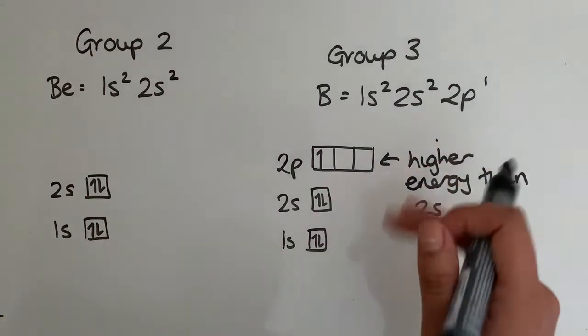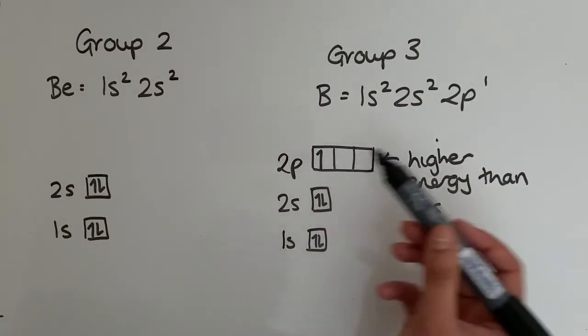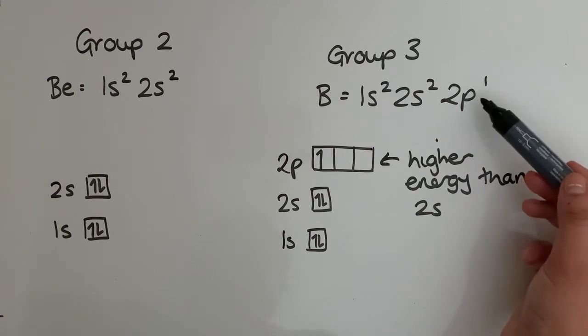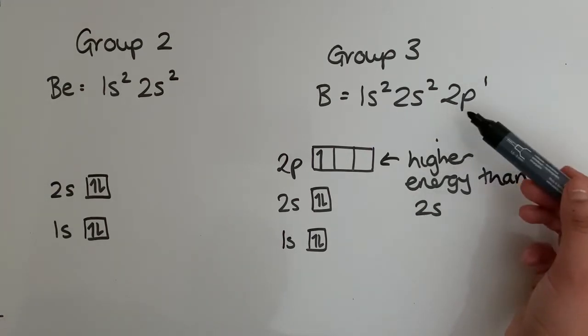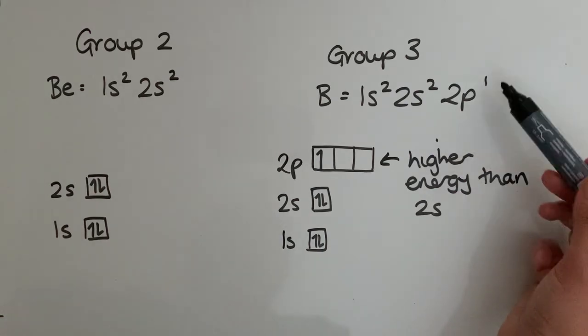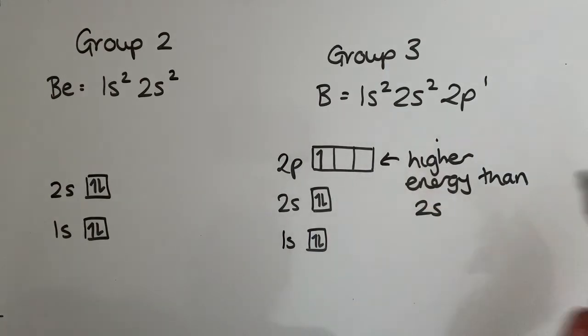As you go down group 3, all of them will end in p¹. So this one's 2p¹, the next group is 3p¹, the next one will be 4p¹ and so on. They all have the outer electron in the p subshell. So you'll always have that dip going between group 2 and group 3.